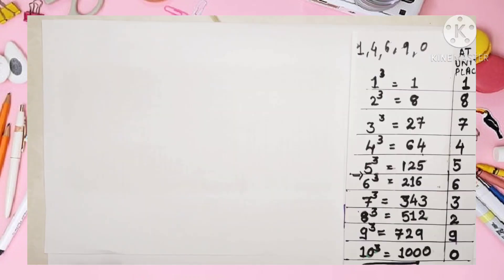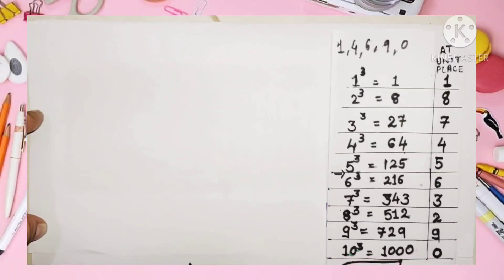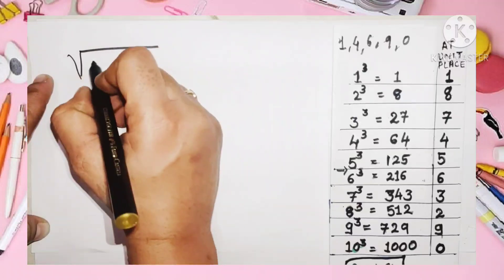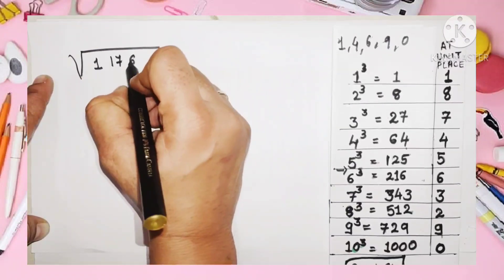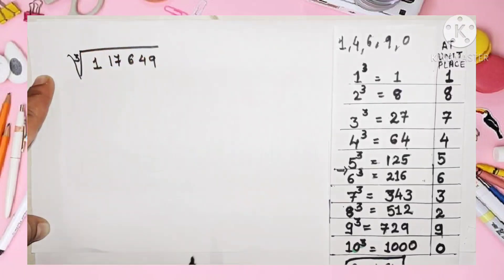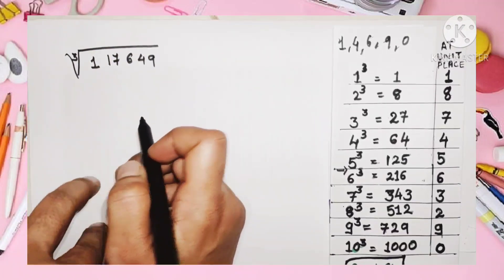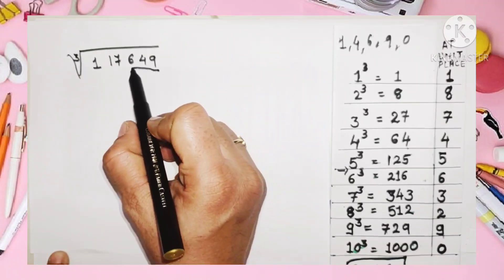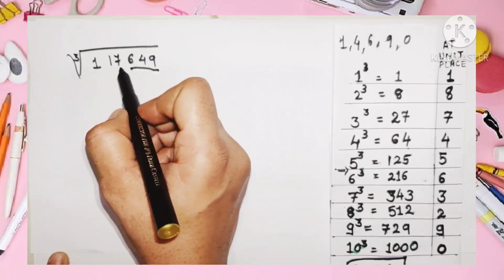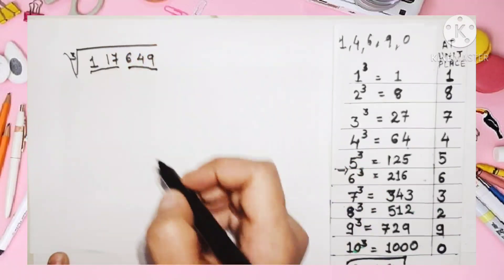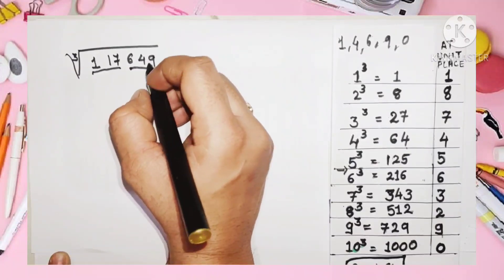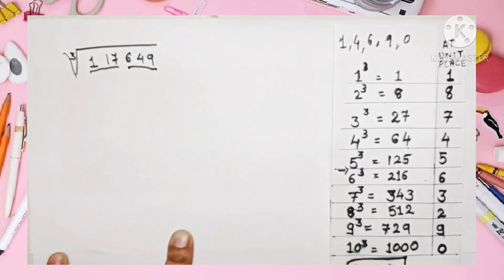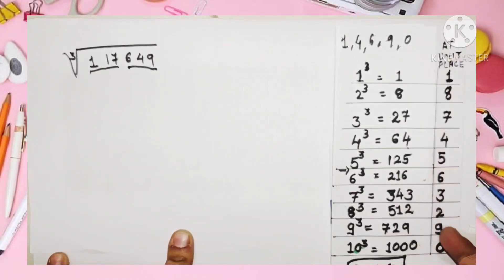Let's see our first example: the cube root of 117,649. First, we make groups of three digits from right to left. So the first group is 649 and the second group is 117. In the first group, the unit digit is nine. Checking the chart, nine at the unit place corresponds to nine, so we write down nine.